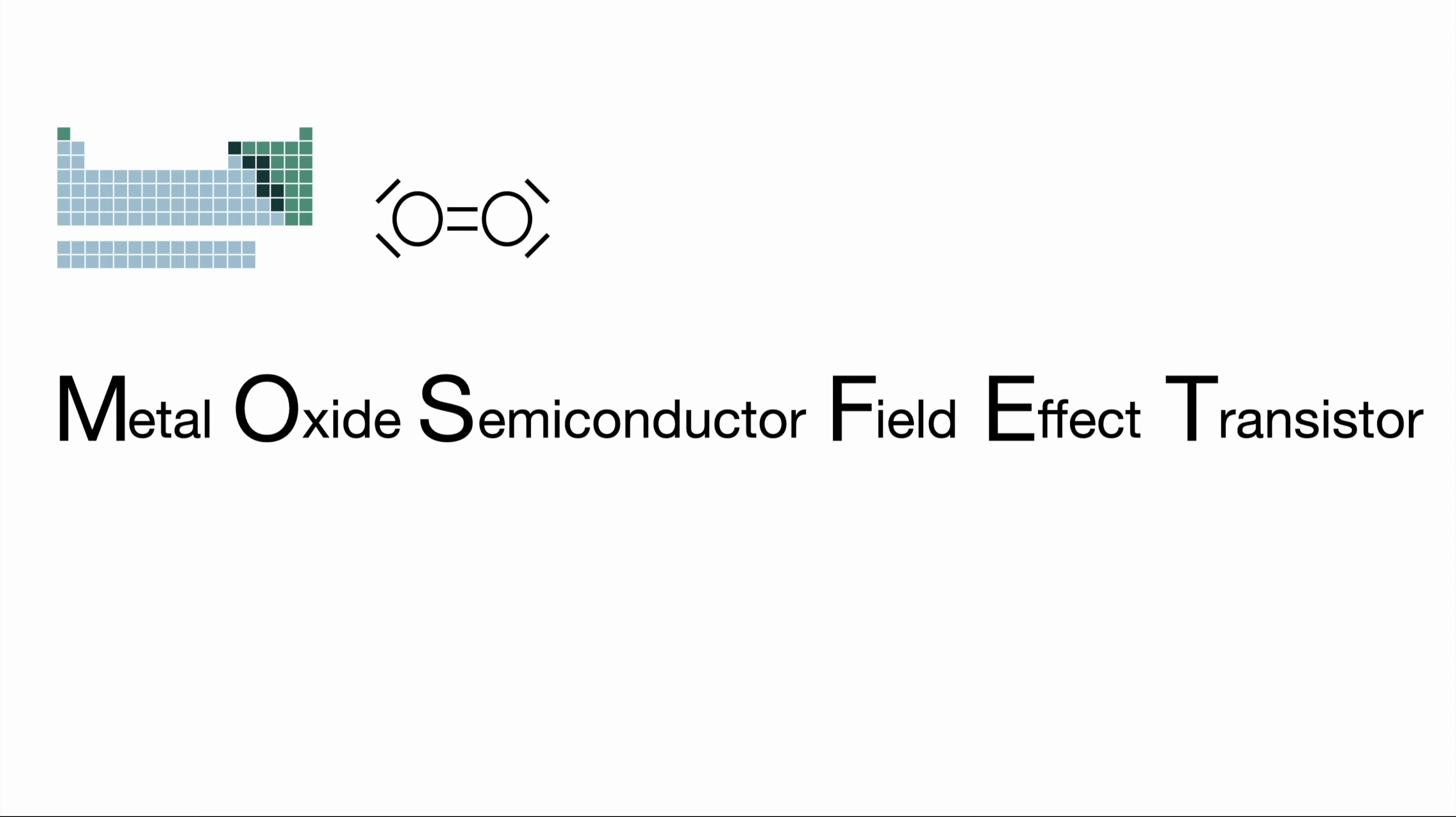Oxide is a material that got oxidized within the process. A semiconductor is a material that could act as a conductor under certain circumstances.